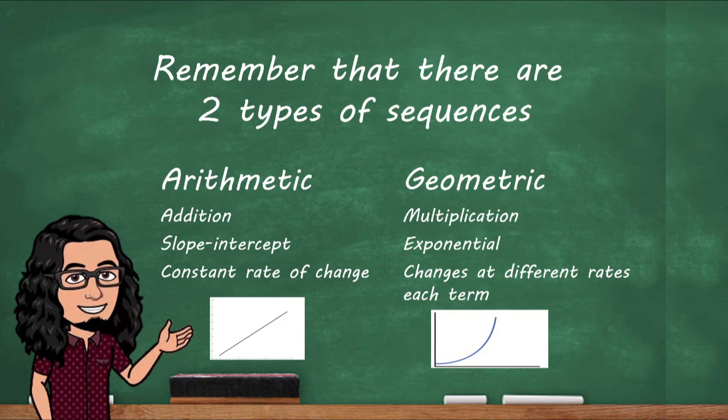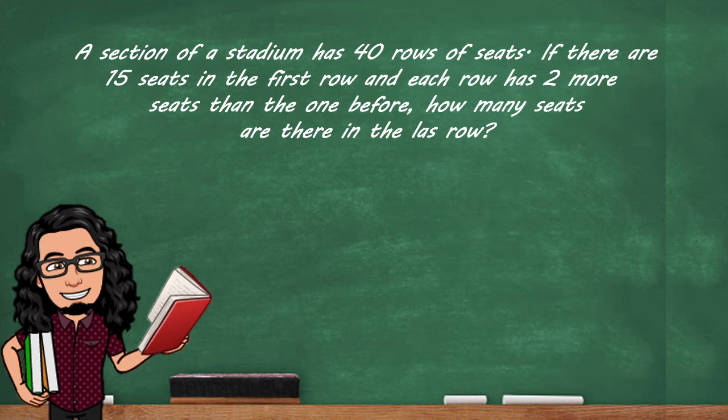Let's review our first example. A section of a stadium has 40 rows of seats. If there are 15 seats in the first row and each row has two more seats than the one before, how many seats are there in the last row?